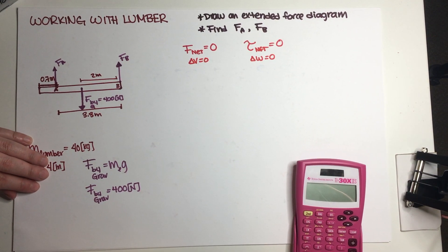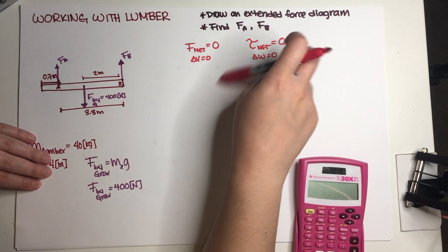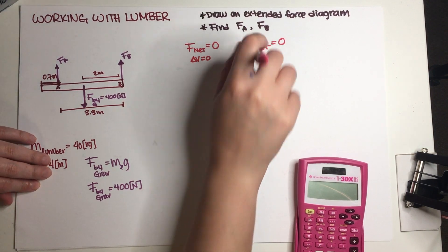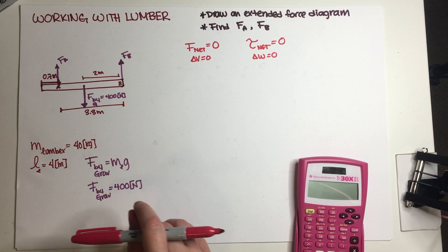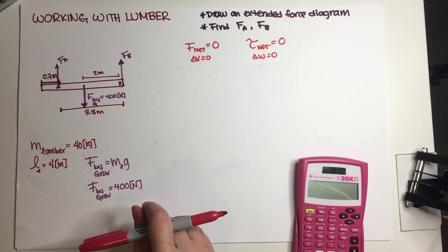Now something that's always tricky about these sort of problems is whenever we have a torque problem but the pivot point is not clearly defined. And this is one of those cases in which you get to pick whatever you want as a pivot point.